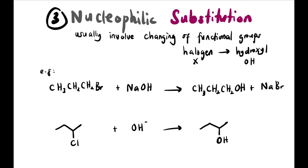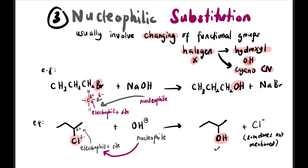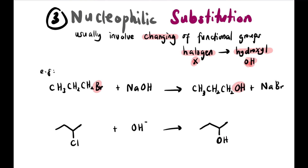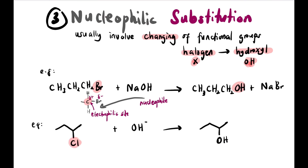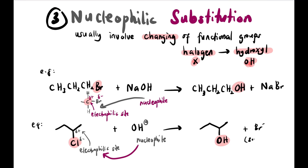Nucleophilic substitution involves changing a functional group — for example, halogen to hydroxyl, or halogen to cyano (CN). In the first example, Br is replaced by OH. The carbon attached to CH2Br is partially positive — the electrophilic site — and is attacked by a nucleophile, giving nucleophilic substitution. Note that substitution gives 2 reactants and 2 products; the side product Cl− (or Br−) is sometimes not written in the question.